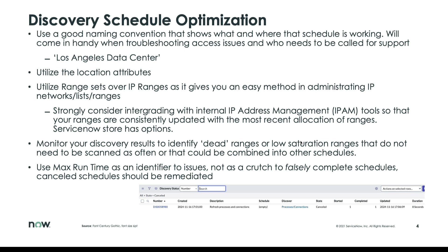Also consider integrating with an IPAM solution — this will be a time saver. Network teams may send you a spreadsheet, may forget, or may not communicate well, making it hard to know where your ranges are. But if you build an integration with something like Infoblox, you can have it run nightly to pull in all updates — newly allocated, removed, or modified — and populate your range sets. There are great applications on the store, and ServiceNow has one as well, so strongly consider that if you don't have a good relationship with knowing what's current on your network.